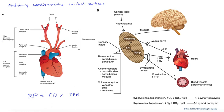In this series of figures, we'll examine medullary cardiovascular control centers, specifically looking at neural control of blood pressure. Let's start down here in the bottom left with our blood pressure equation: blood pressure equals cardiac output times total peripheral resistance.